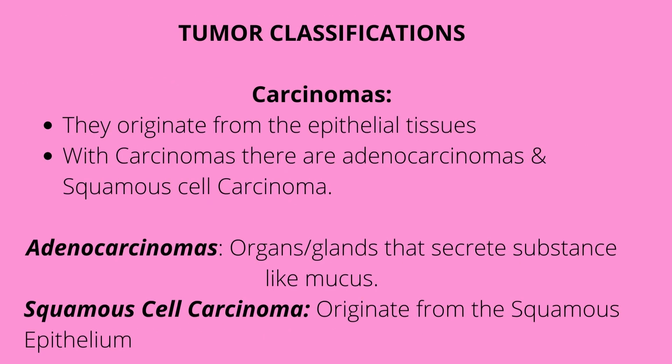Tumors are classified in various ways. Carcinomas originate from epithelial tissue, which lines body surfaces, skin, and glands. Under carcinomas, there are adenocarcinomas — from organs or glands that secrete substances like mucus — and squamous cell carcinomas, which originate from squamous epithelial cells.